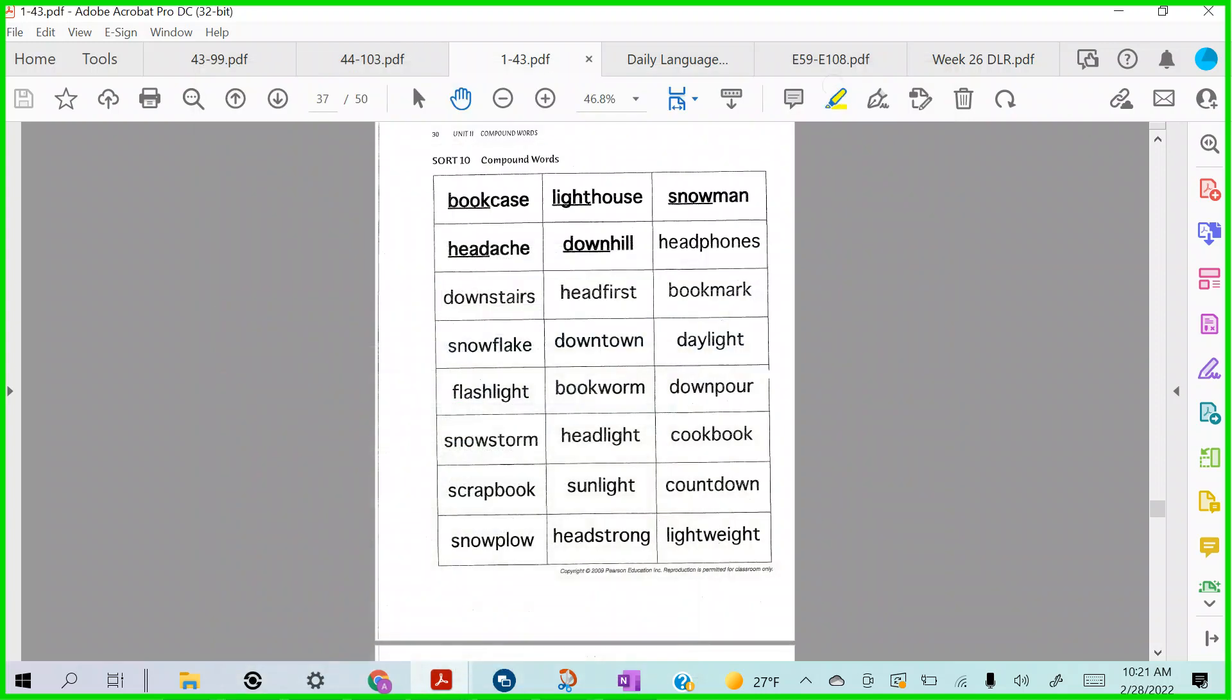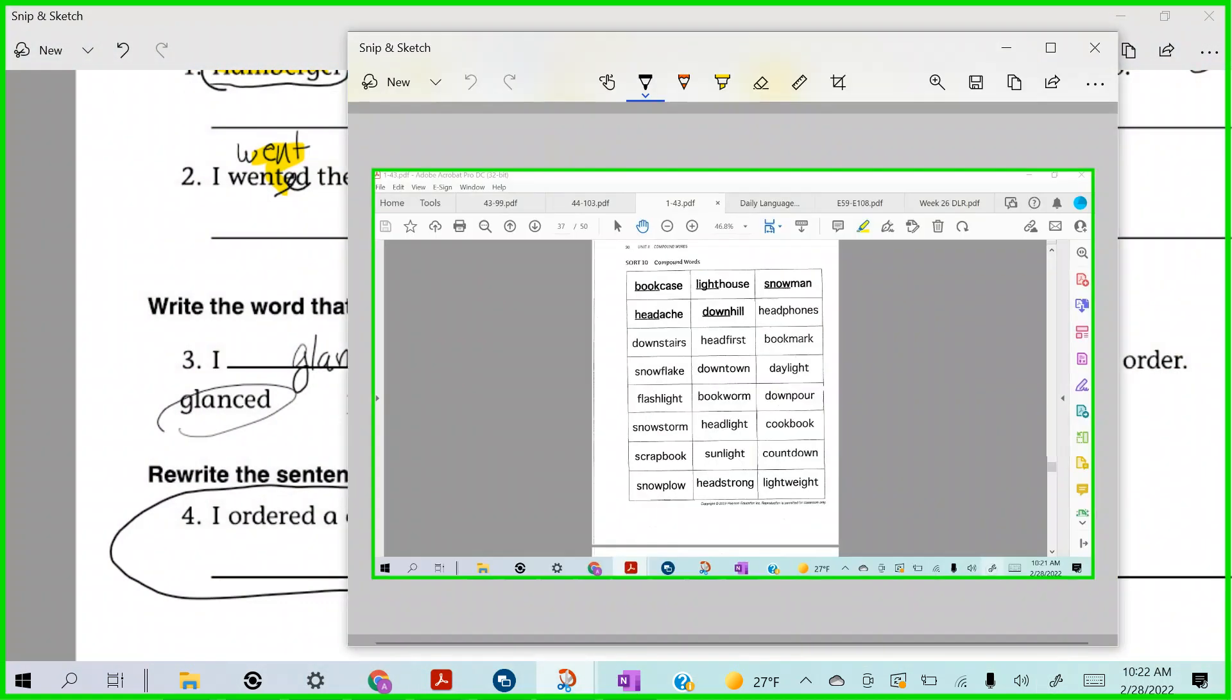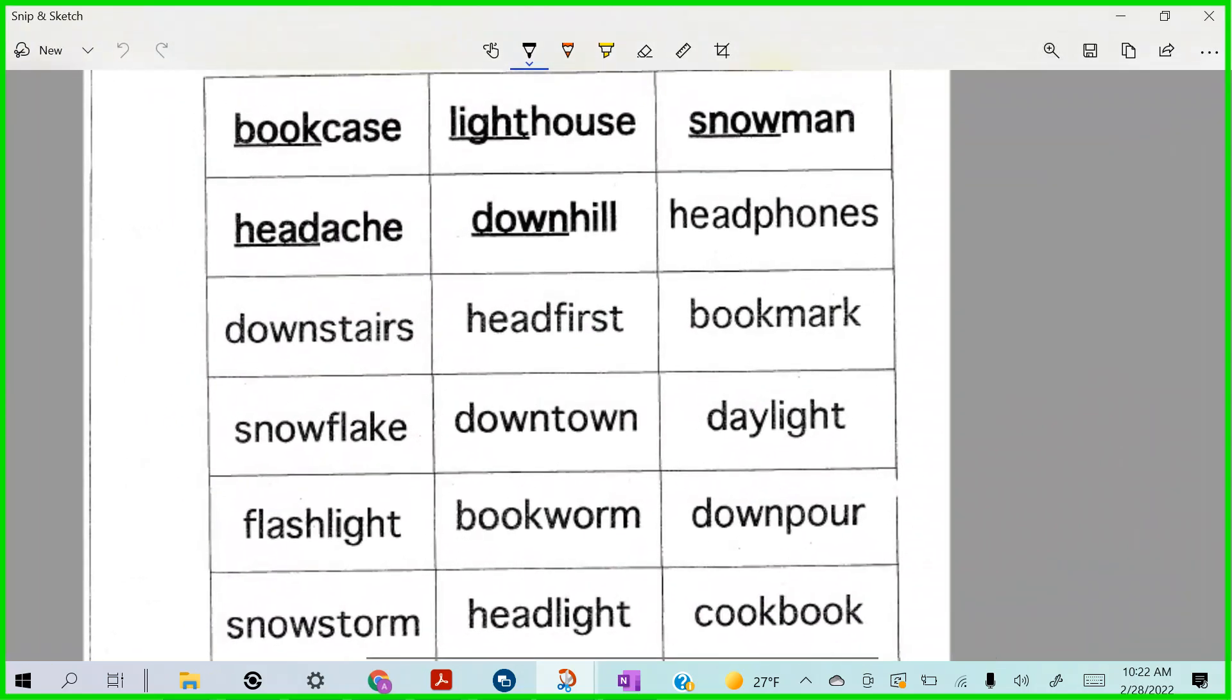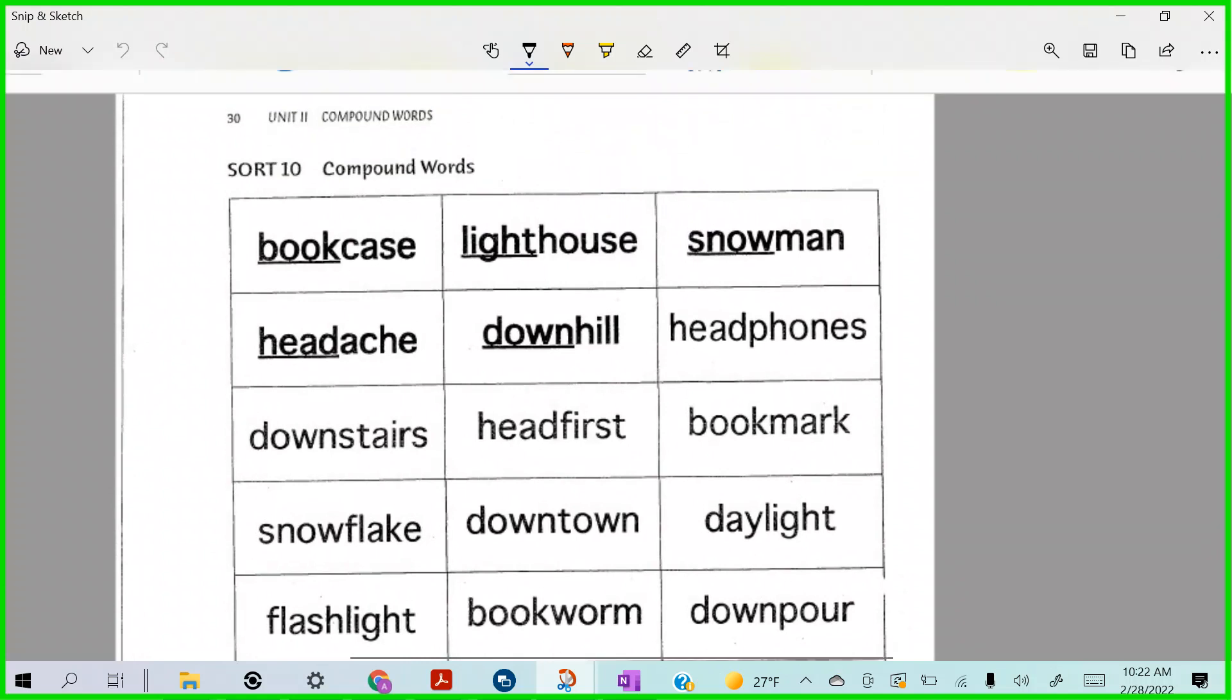All right, my yellow groupers, we are week 26, we're looking at compound words, so let's do it. What do we mean when we say a compound word? We take two words, we join them together to make a new word.